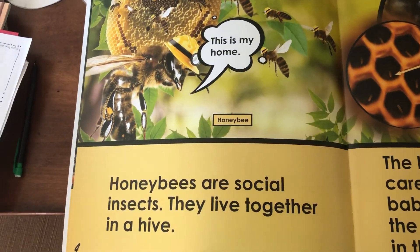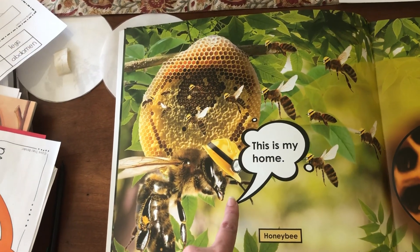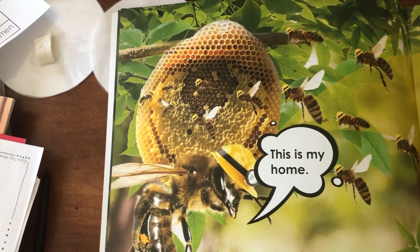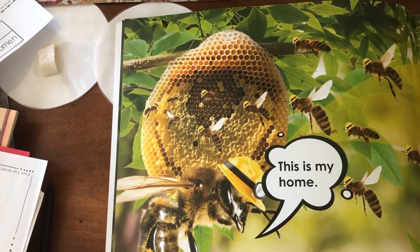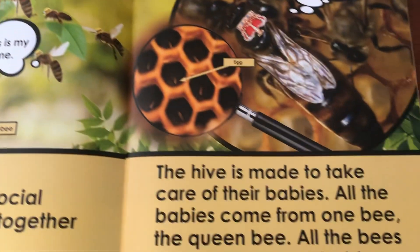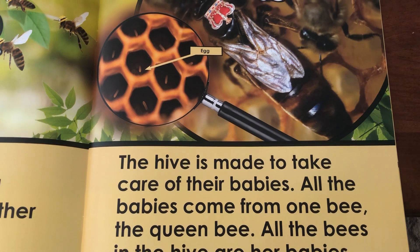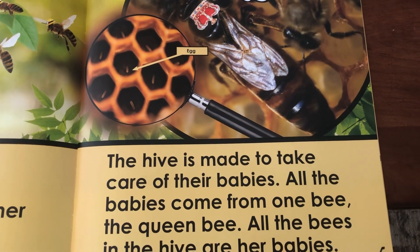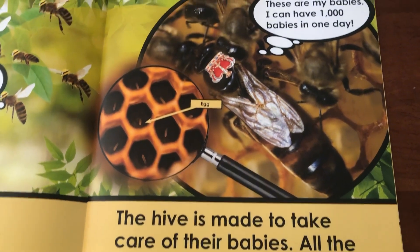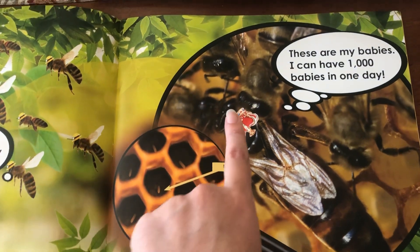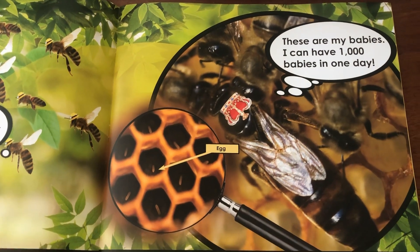Honeybees are social insects. They live together in a hive, and he's telling us, "This is my home." Look at that cool picture of a hive — that's the home to honeybees and lots of them live in there. The hive is made to take care of their babies. All the babies come from one bee, the queen bee. All the bees in the hive are her babies. There's the queen, and they put a little crown on her to show she's the queen. I don't think she really wears a crown — that might be a make-believe part of the book.